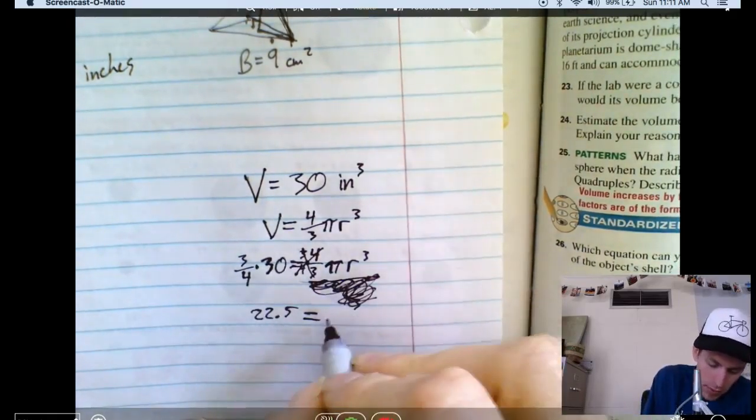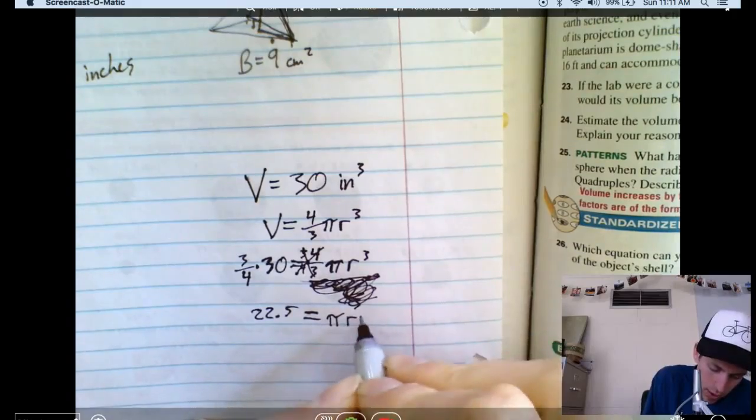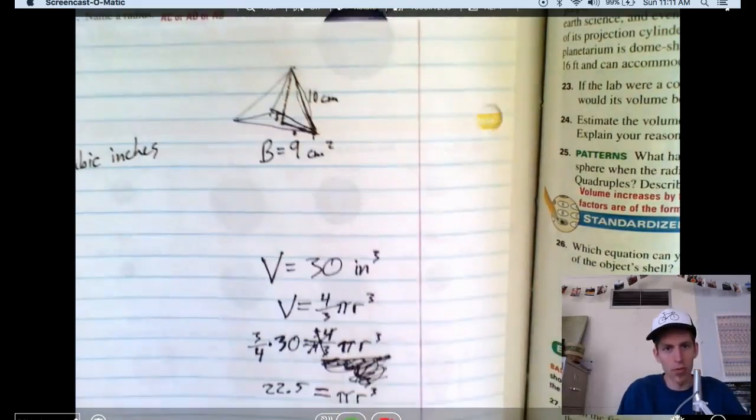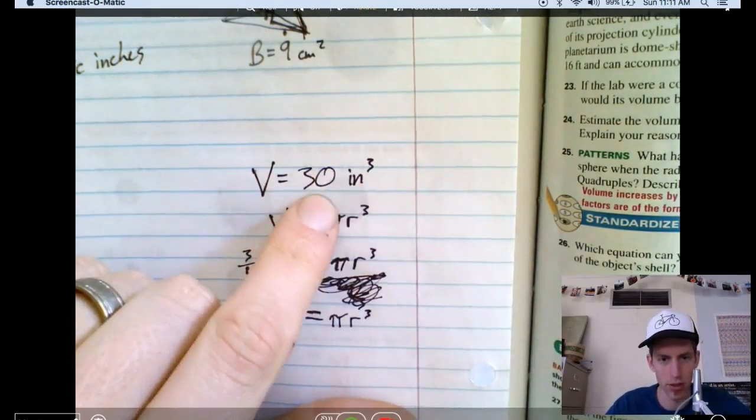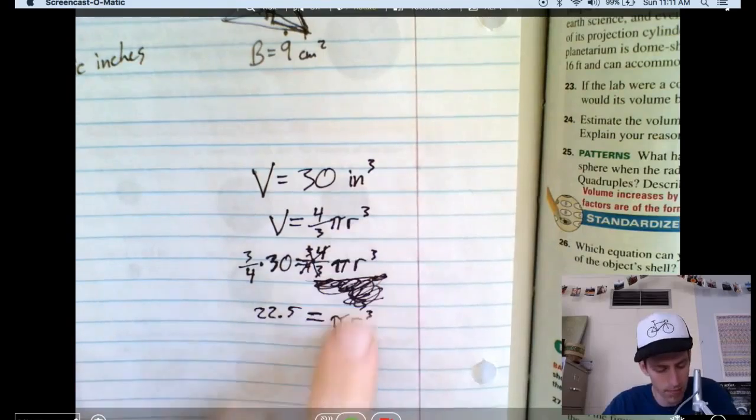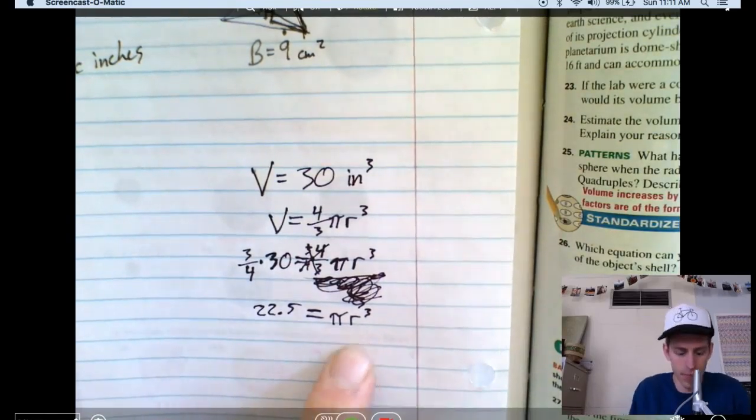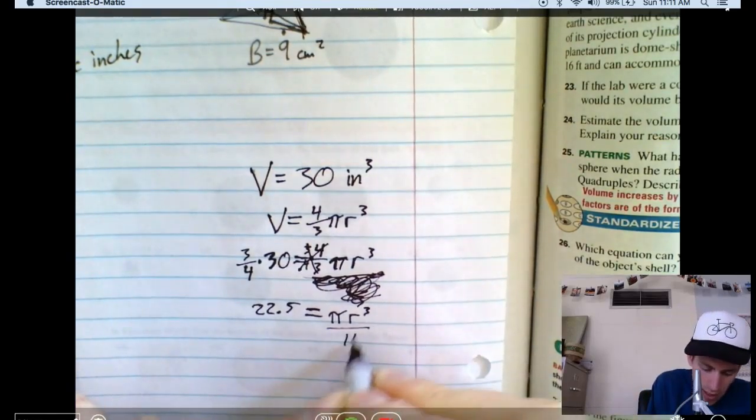So twenty-two and a half equals pi r cubed. Let's just remember here, what are we doing? Humpty Dumpty has a big head. It's thirty cubic inches. We're trying to find the radius of his head, right? So we're getting r by itself. Divide both sides by pi now.